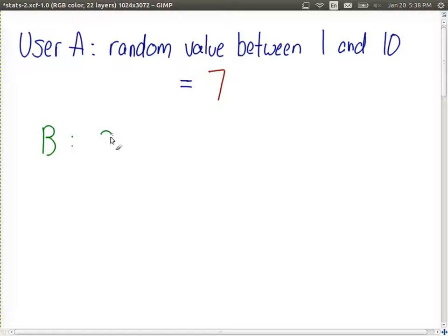Maybe they choose 3, and they ask A, did you choose 3? And A says no. So B chooses again. And it doesn't choose 3 again. It selects from 1 and 10, but it will not select 3 again. So maybe in the second attempt, they choose 5. And asks A, A says no.